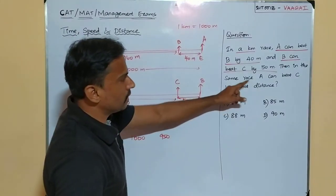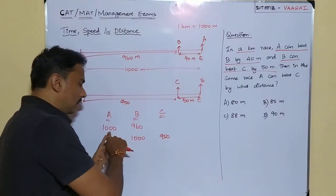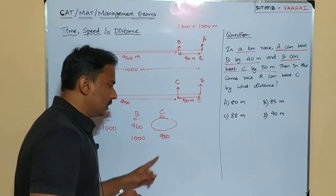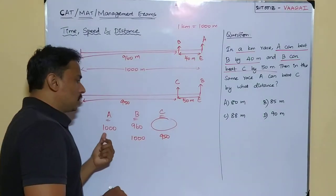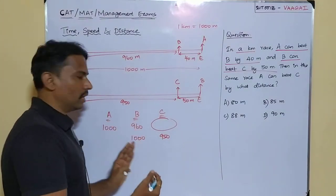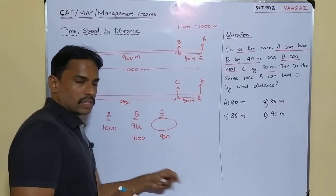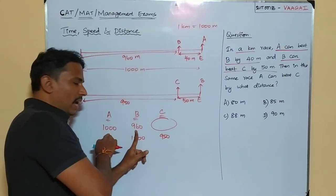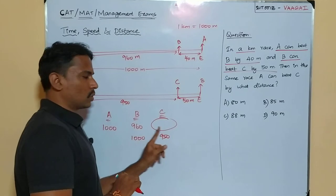The question is: when A is about to finish the race — when A is at 1000 meters — where is C? The value of 950 meters for C applies when B finishes (B at 1000m). What we actually need is C's position when A finishes. We know when A is at 1000m, B is at 960m. So the problem reduces to: when B is at 960, where will C be? That is what we need to find.